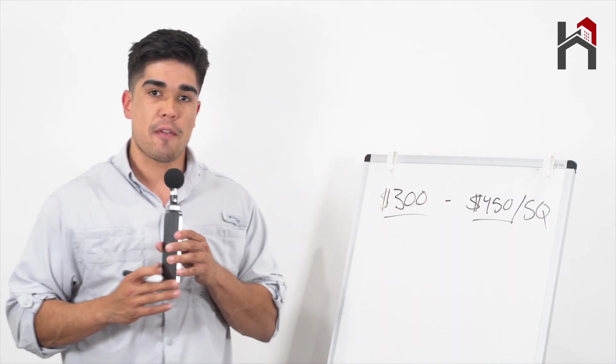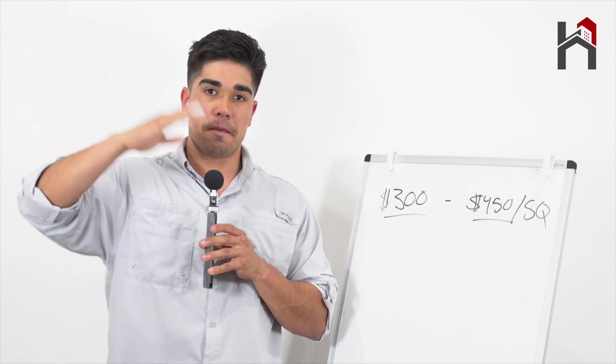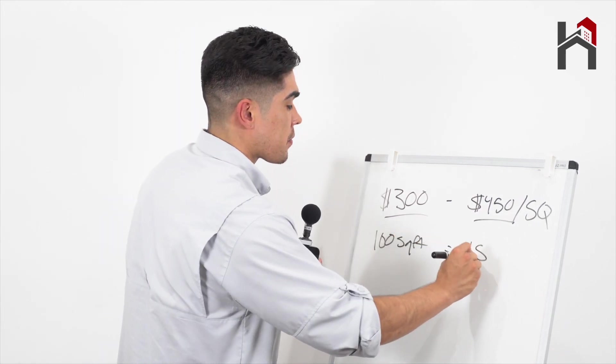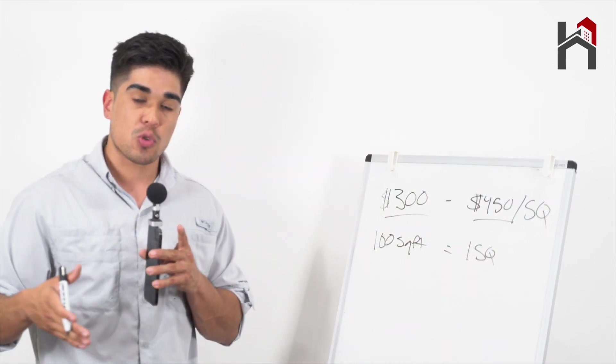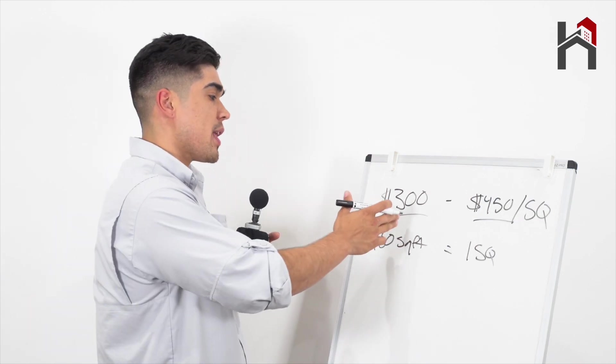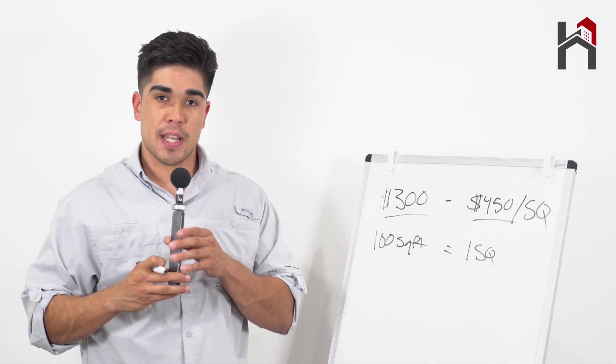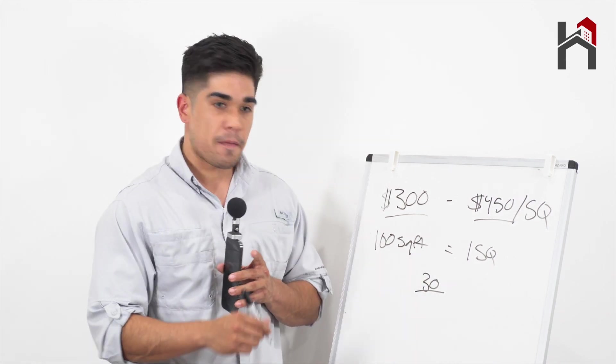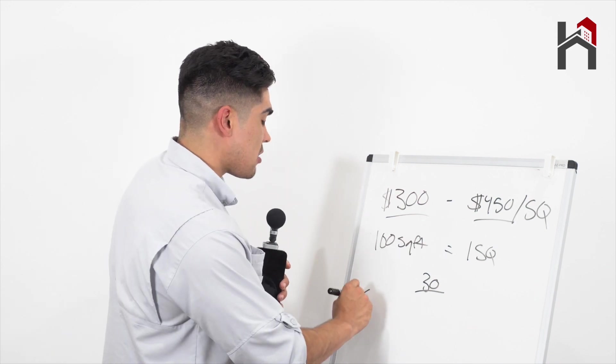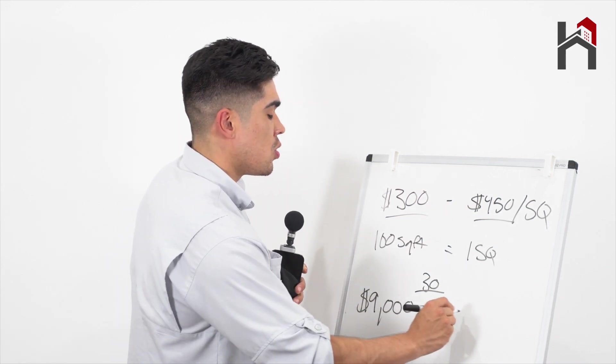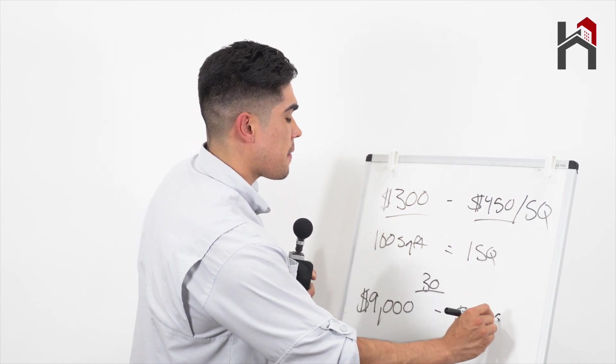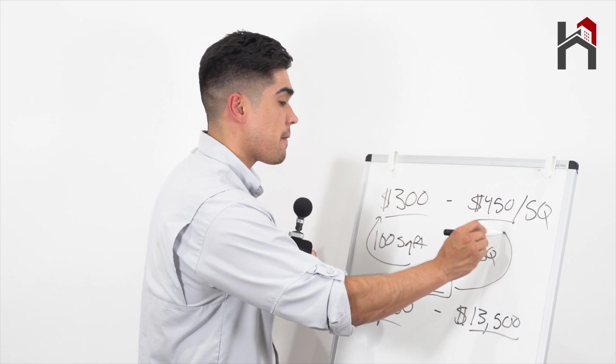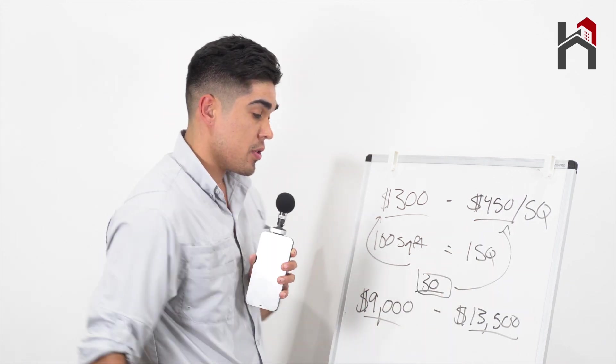Now in the roofing industry, we measure everything by squares. So 10 feet by 10 feet, we multiply them, we get 100 square feet. 100 square feet equals one square. That's how we get our measurements based on how big your roof is. Then we multiply somewhere between that $300 to $450 per square. Let's take an example. Let's say you had a home and your roof had about 30 squares. If your roof had 30 squares, based on these prices I said earlier, you're looking to pay somewhere between $9,000 to $13,500 for a new roof, because we multiply that 30 by 300, and then multiply that 30 by 450.